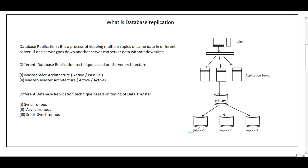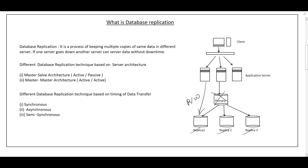We call these replica 1, replica 2, and replica 3. The benefit is that if the primary DB goes down, we can serve read and write requests from another DB — without any downtime, that other DB will serve the read and write requests.